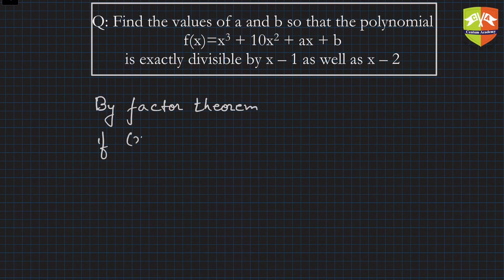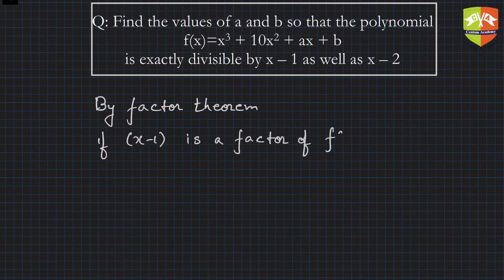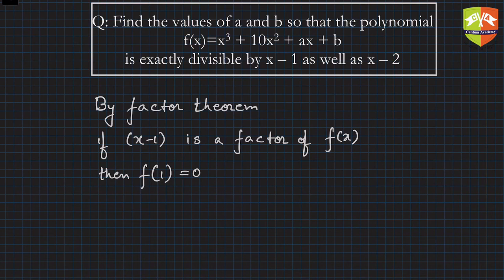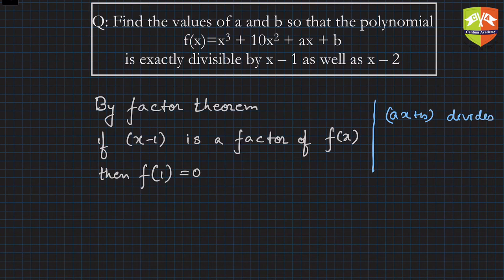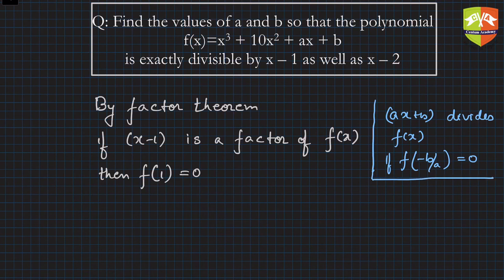By factor theorem, if x minus 1 is a factor of f(x), then f of 1 is equal to 0. Remember the general form: ax plus b is a factor of any polynomial f(x) if f of minus b by a equals 0. In this case the linear divisor is x minus 1.